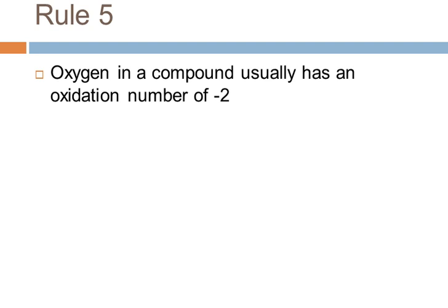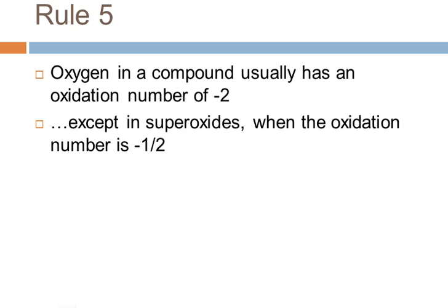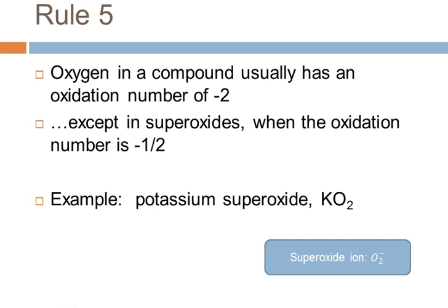There's one other exception for oxygen: superoxides. In superoxides, the oxidation number is minus one-half. We normally think of oxidation numbers as integers, but that's not required. In the superoxide ion — which is biologically important — two oxygen atoms share a minus one charge, so each oxygen has a minus one-half. For example, in potassium superoxide, the potassium has an oxidation number of plus one, and each oxygen has a minus one-half. This exception won't show up very frequently, but it's worth knowing.